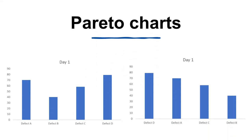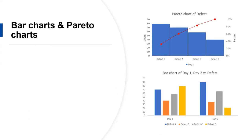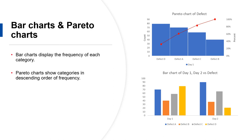Here are two bar charts — which of these charts is a Pareto chart? Let's review: we use bar charts to display the frequency of each category. Pareto charts show the categories in decreasing order of frequency. In general, we use bar charts and Pareto charts to illustrate the frequencies of categorical data.